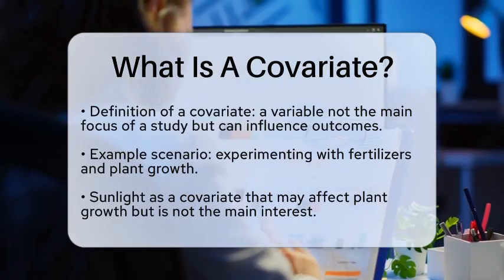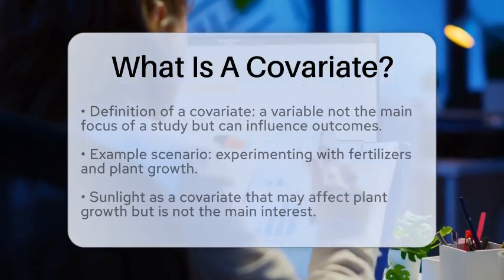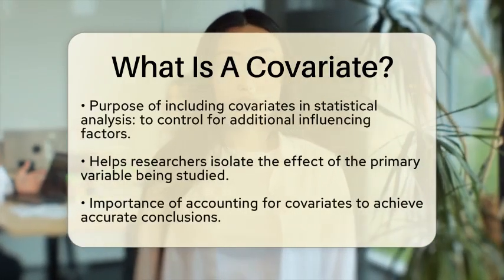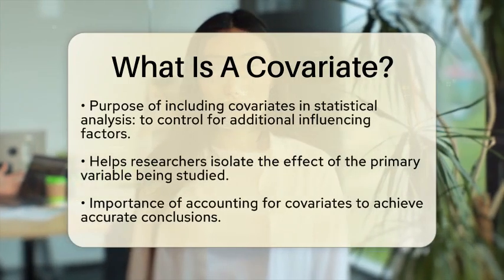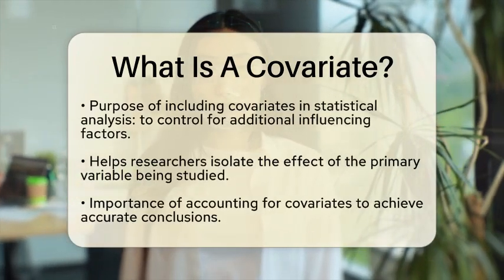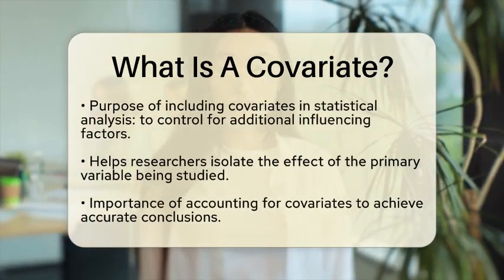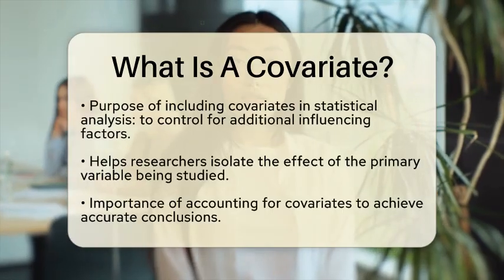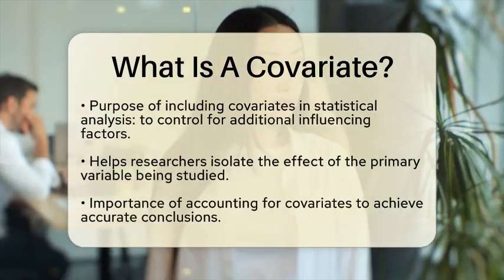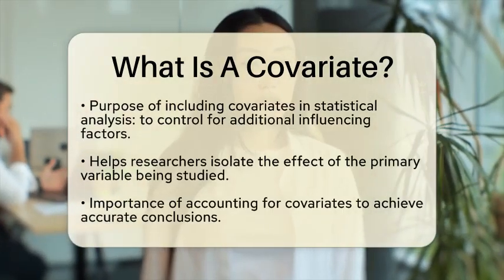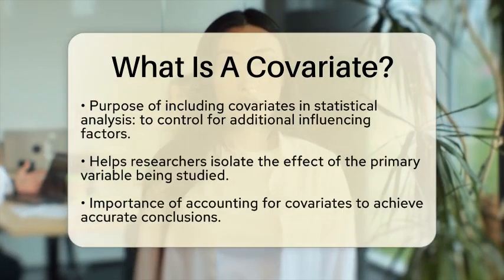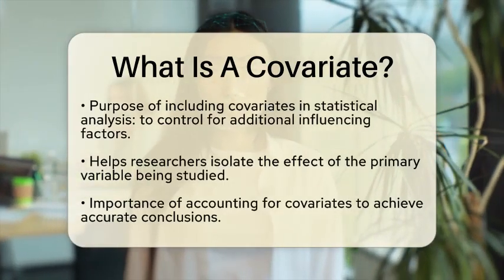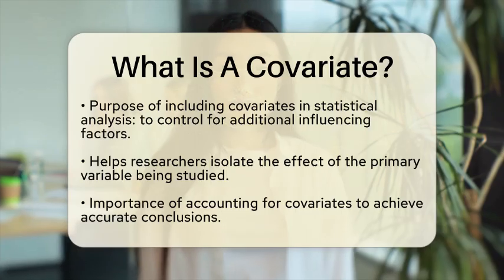This brings us to the concept of a covariate. A covariate is a variable that is not the primary interest of a study but can still influence the outcome. In statistical analysis, covariates are included to help control for these additional factors, allowing researchers to isolate the effect of the main variable being studied.